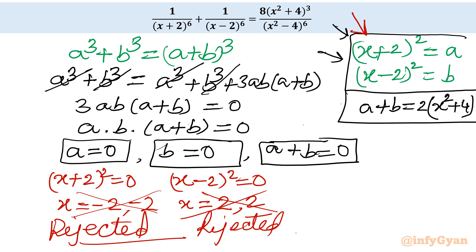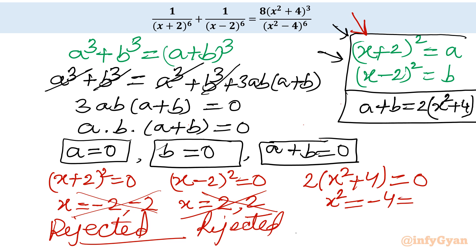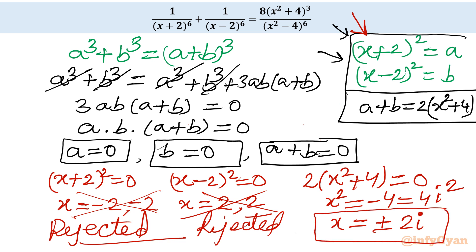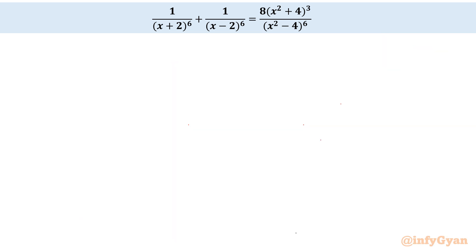For a + b = 0: we have 2(x²+4) = 0, giving x² = −4 = 4i². Taking square roots both sides yields x = ±2i. So only two solutions exist, and both are complex-valued. The real solutions were rejected as they were not in the domain of the equation. The accepted solutions are x = ±2i.